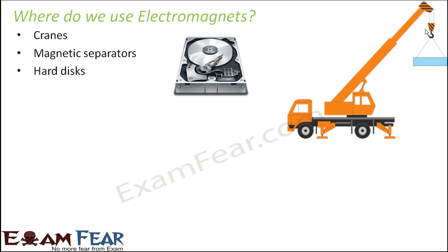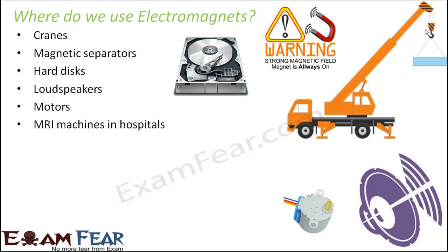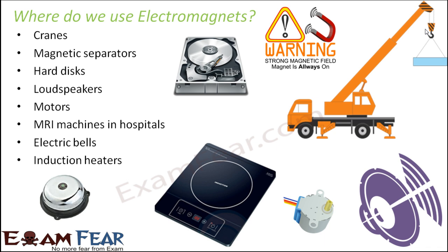A few more examples: hard disks also have electromagnets, as do loudspeakers, motors, and MRI machines in hospitals. Electric bells, a very common thing we encounter in day-to-day life, also see a major role of electromagnets. Induction heaters and induction cooking tops have also become very common these days — they rely on electromagnets because electromagnets convert electrical energy into heat energy, and that is how heating happens in induction heaters. So electromagnets are used in a wide variety of applications.